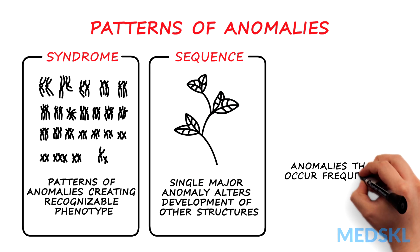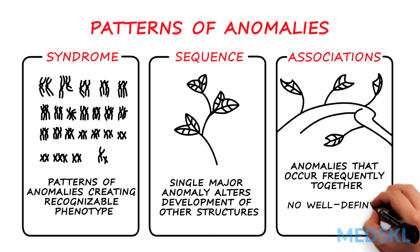Anomalies that occur together more frequently than expected by chance alone are called associations. However, these usually don't have a well-defined, unifying etiology.